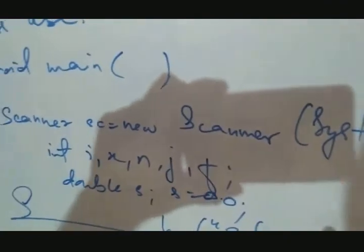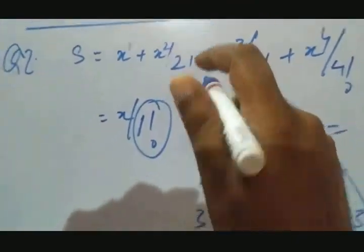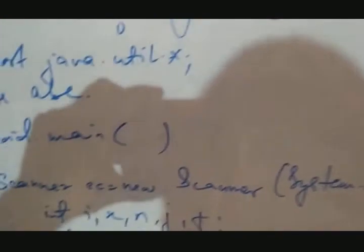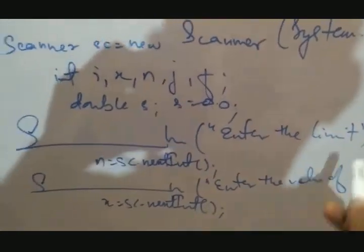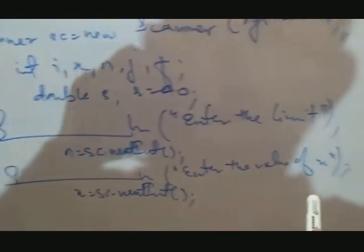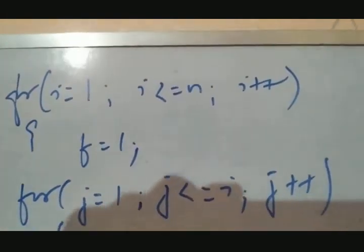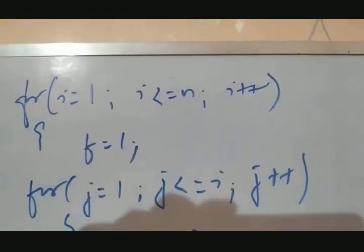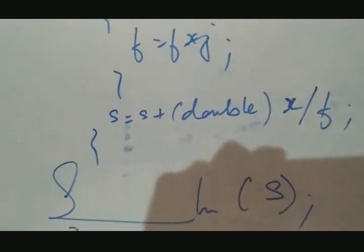So import java dot util class ABC void main. Then you with scanner sc equals to new scanner. It's int i, j, n, x, f. It's double s. And you get the limit here and then value of x. Now for i equals to 1, i less than equals to n, i plus plus. For j equals to 1, j less than equals to i, j plus plus. You get the factorial f equals to f into j. Sum.